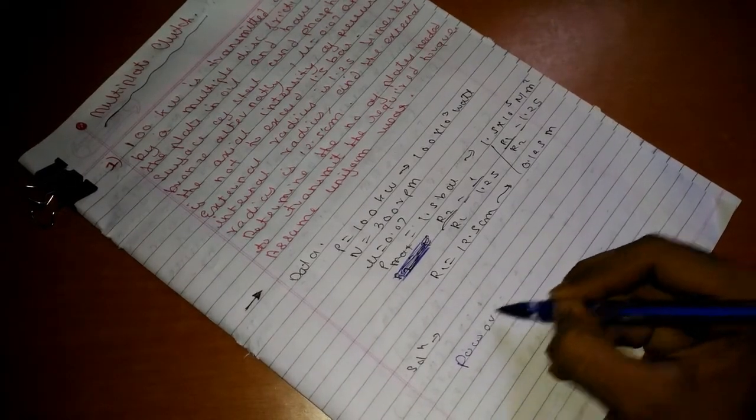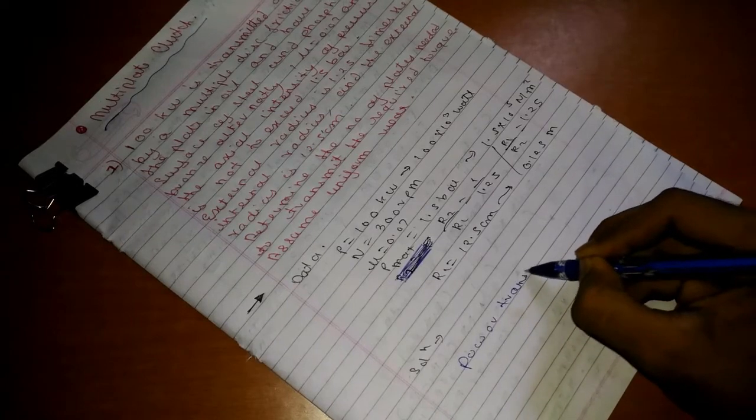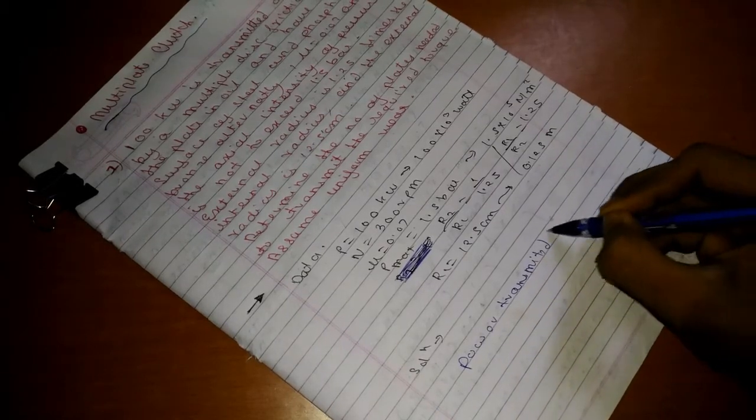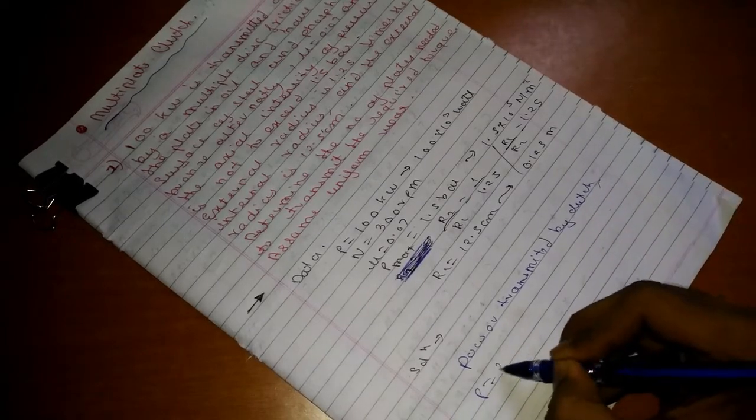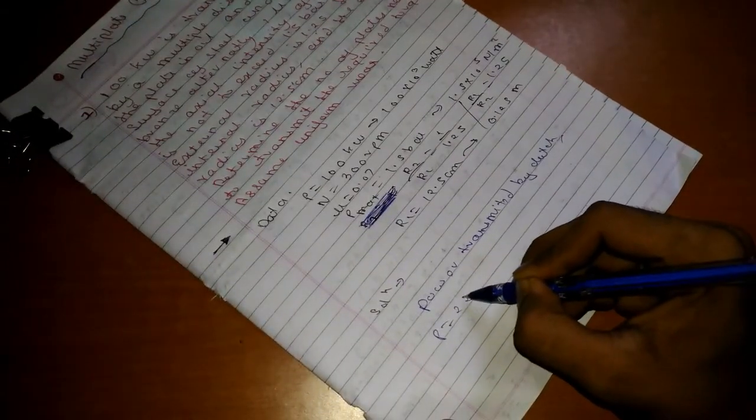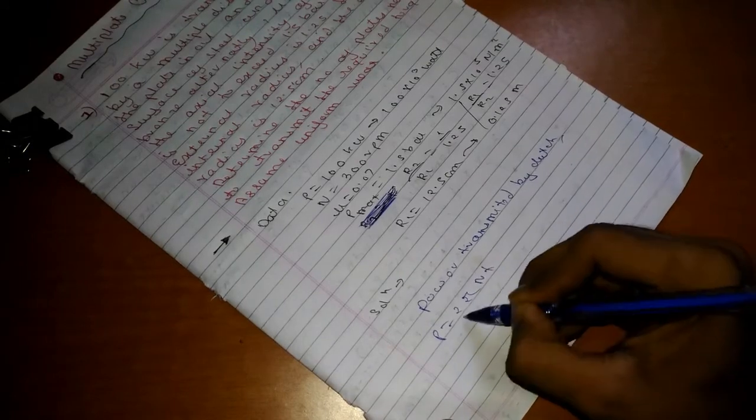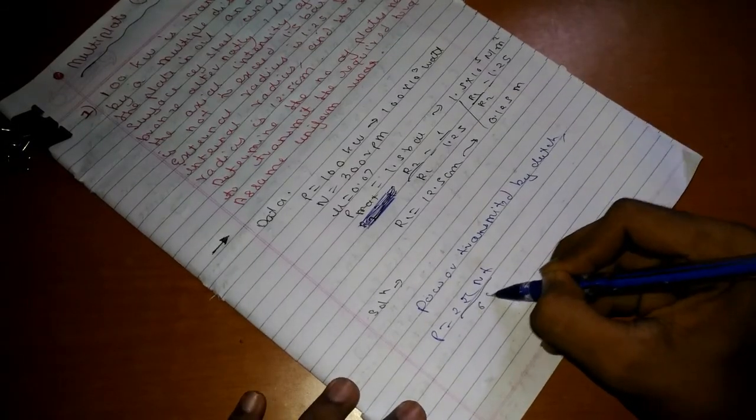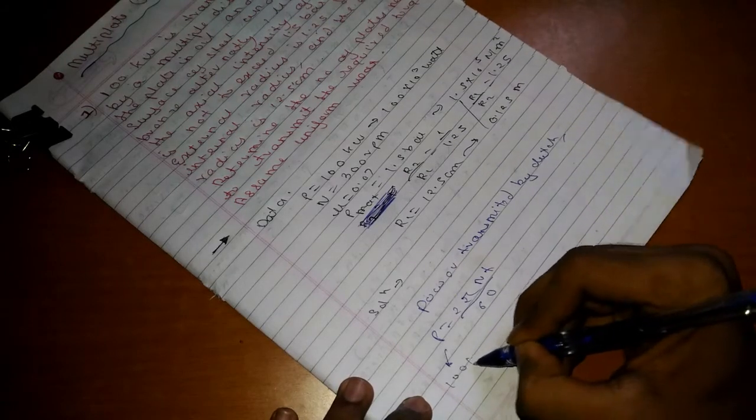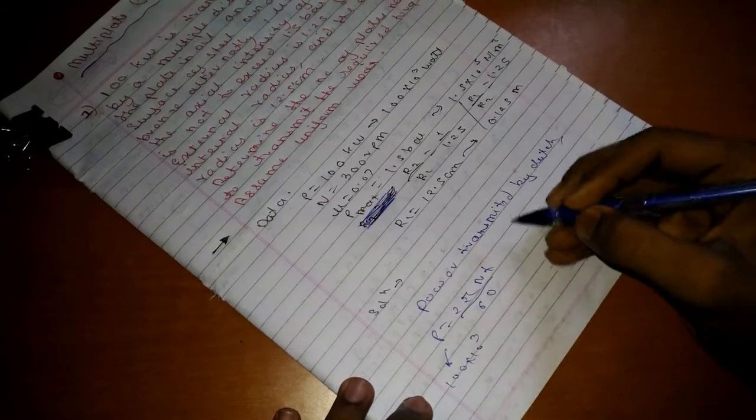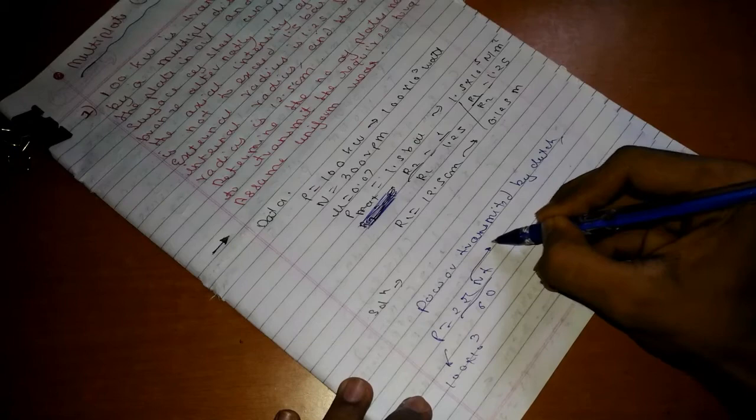Now, power transmitted by clutch can be written as power equals 2πnT/60, where we have the power as 100 into 10 raised to 3 and n as 3000.